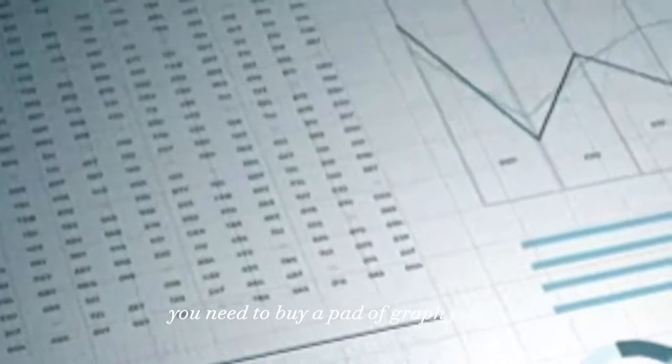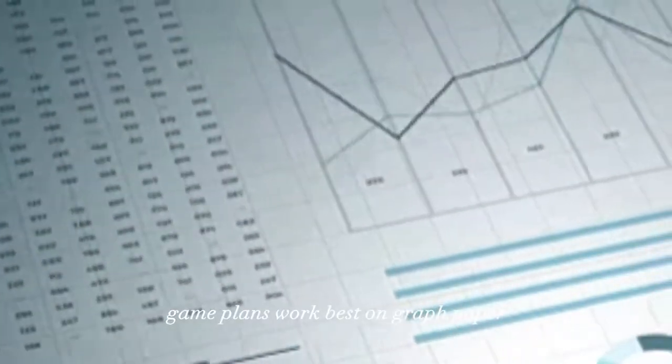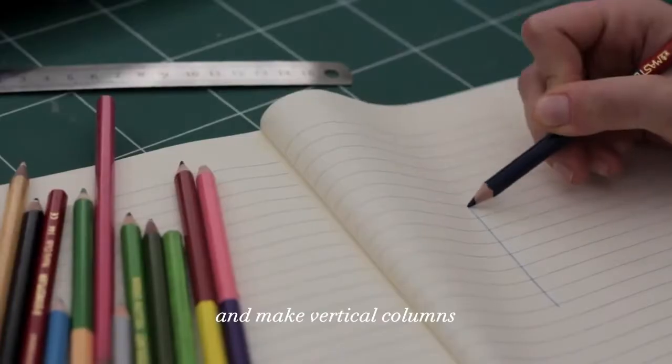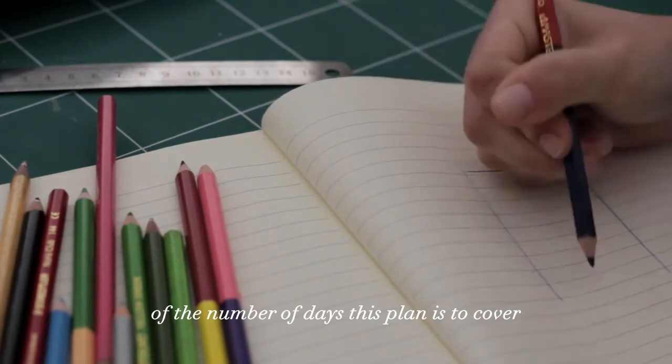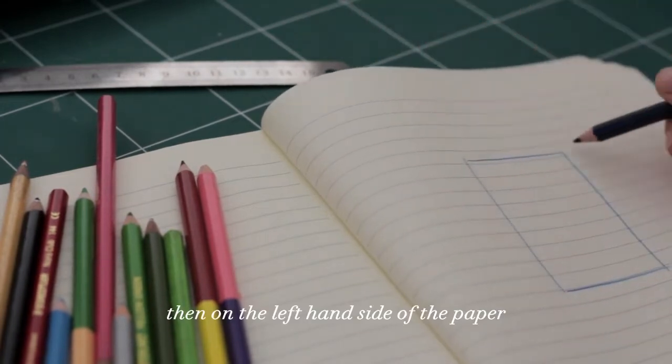Game plans work best on graph paper. So take a sheet of graph paper and make vertical columns of the number of days this plan is to cover. Then, on the left-hand side of the paper, write the heading 'Activities.'